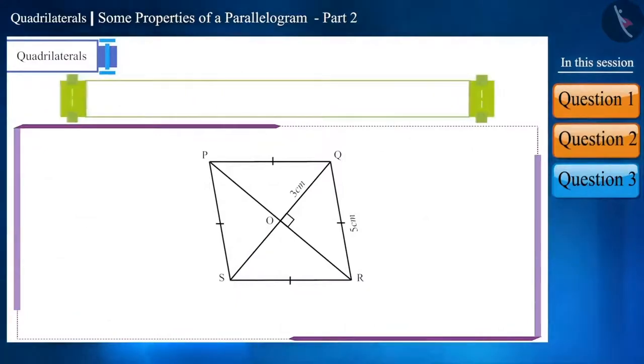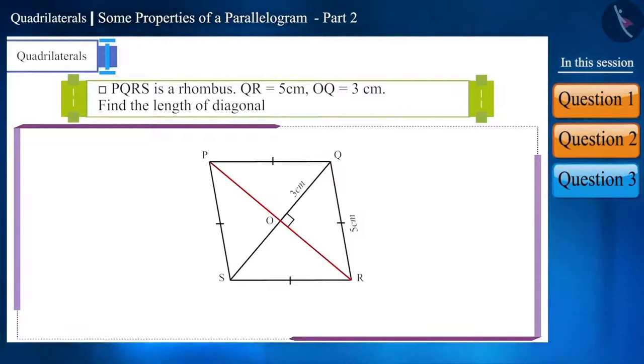On the given figure, quadrilateral PQRS is a rhombus and the measure of sides QR and OQ are given to be 5 cm and 3 cm respectively. Now, find the length of diagonal PR.